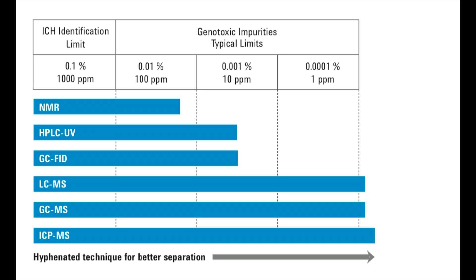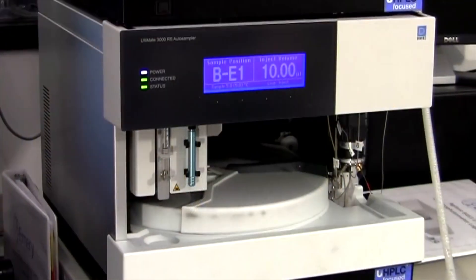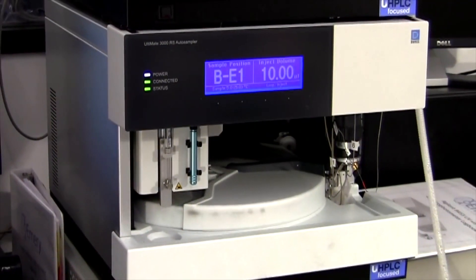This figure shows that a lower detection level of genotoxic impurities requires more sophisticated analytical techniques for quantification. The nature of the impurity, the characteristics of the active pharmaceutical ingredient, and the level to be determined will all influence the detection technique employed.